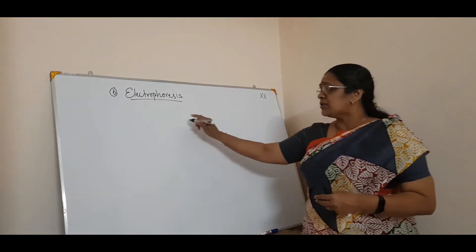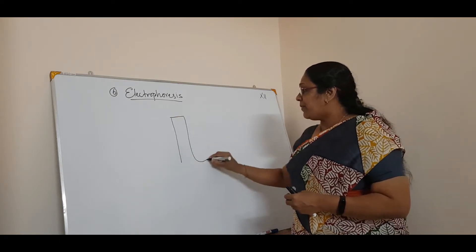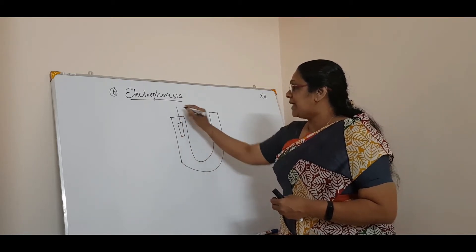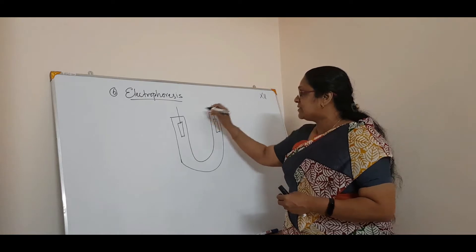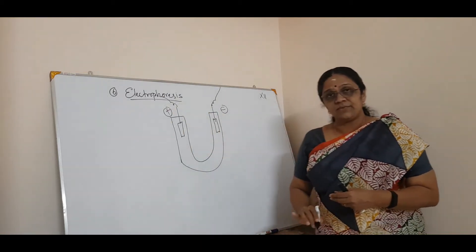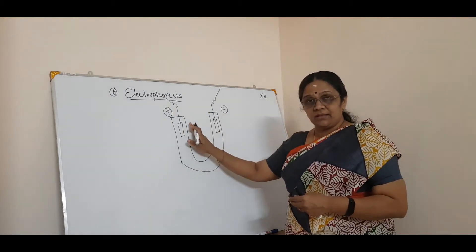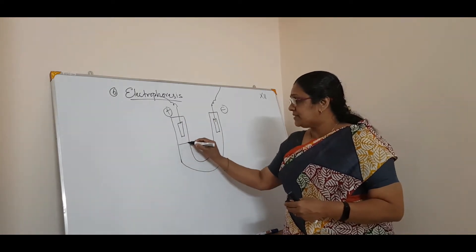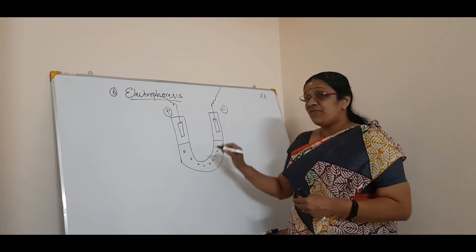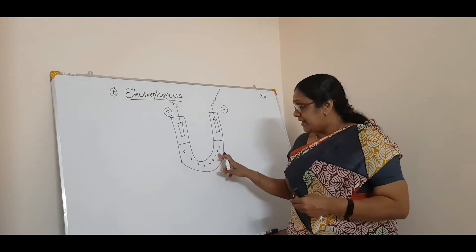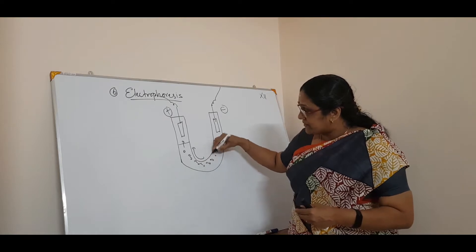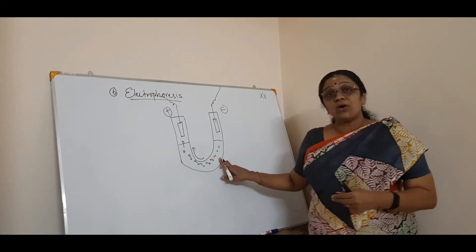In electrophoresis, you apply a potential difference between two platinum (inert) electrodes — one positive and one negative — connected to an electric potential. This is the initial position; there are colloids in it. If it is a negative colloid, it will move to the positive side, showing that the colloidal particles are charged.